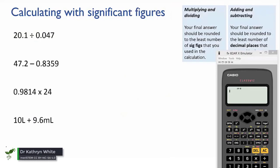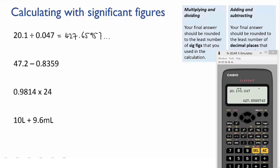So let's try some examples. Firstly, 20.1 divided by 0.047. We put that into the calculator and we get 427.65957 etc. Now of the two numbers that we used in our calculation, 0.047 has the fewest sig figs, it has two. So our final answer must also be rounded to two sig figs. This gives us 430.